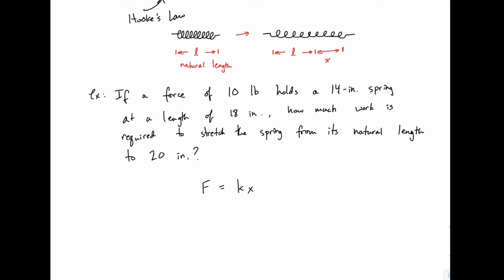So we're going to set up this relationship f equals kx first, and we're going to use it once to solve for k, and then we'll use it a second time to integrate to find the work. So we kind of use this relationship f equals kx in two places, once to find k and once to find the work.